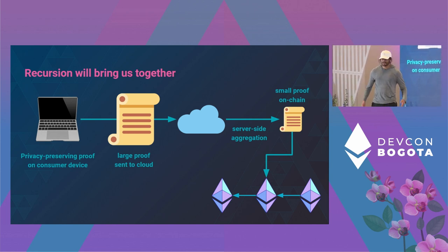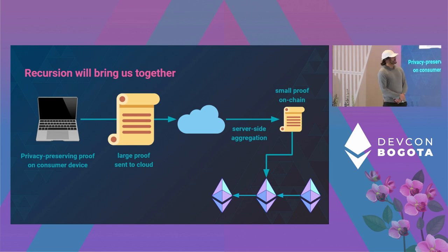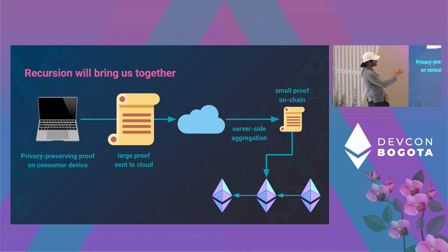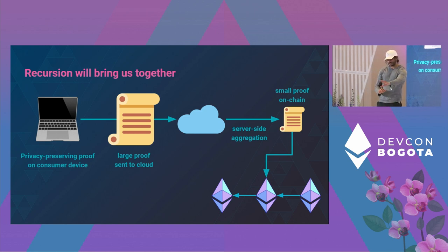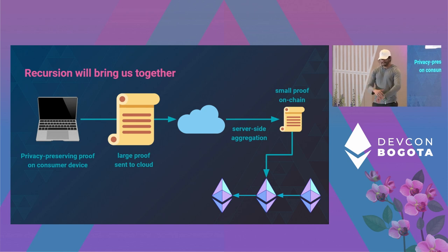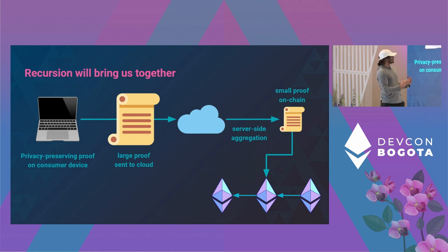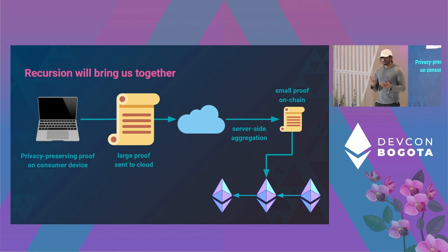Where we see these two things converging is the third quadrant — probably what the future will look like. The idea is that we reduce the surface area of the private-to-public-ish proof to something quite small, which can then be recursively included in a larger proof that is in the succinct-but-not-private domain, and then interpreted on-chain. This way we get all the nice benefits of privacy, succinctness, on-chain applications, pseudonymity, and more.